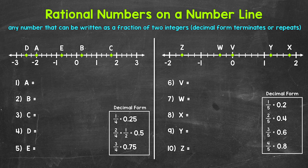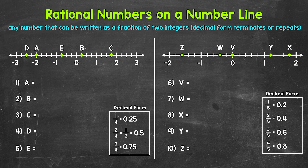Now for this video, we have two number lines with rational numbers graphed on them, and we need to figure out what those numbers are. Let's jump into our examples, starting with numbers 1 through 5. Looking at this number line — and any number line really — we need to understand that if we look at zero, we have positives to the right and negatives to the left. Moving right or up a number line, we increase in value; moving to the left or down, we decrease in value.